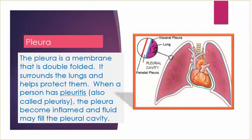Pleura: the pleura is a membrane that is double folded; it surrounds the lungs and helps protect them. When a person has pleuritis, also called pleurisy, the pleura become inflamed and fluid may fill the pleural cavity.